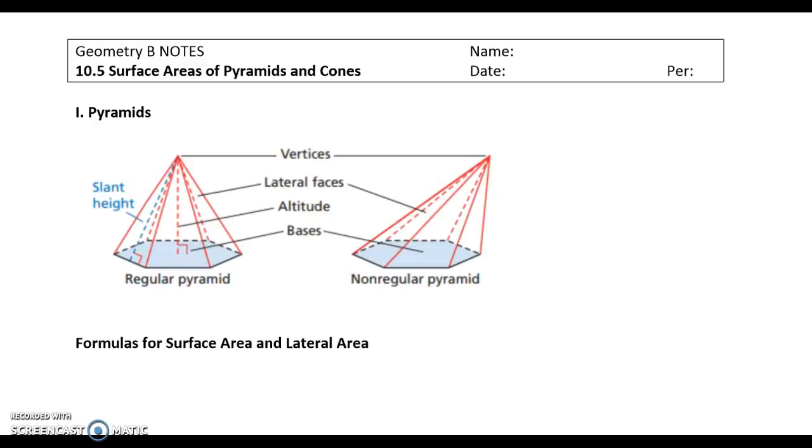So last time we talked about formulas for surface area of prisms and cylinders. This time we're going to go on to pyramids and cones.